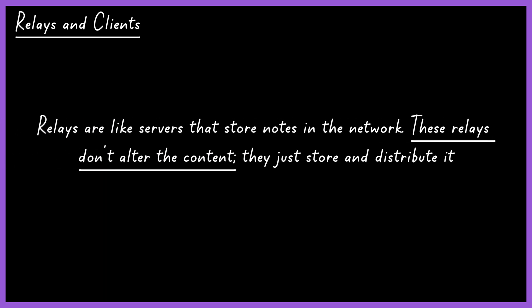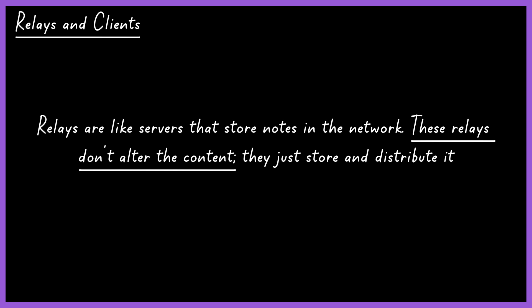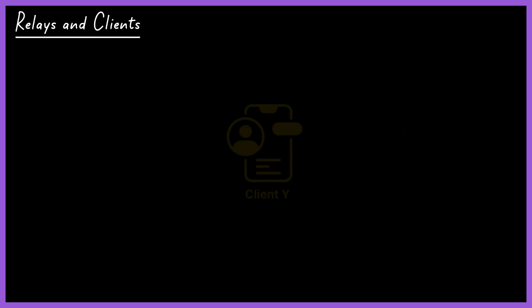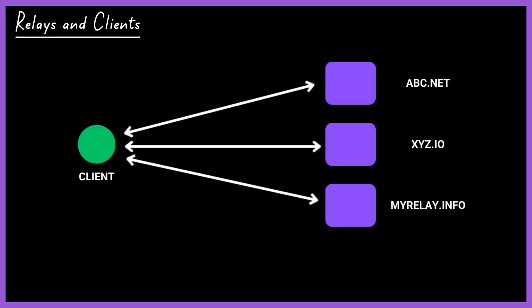To function, Nostr relies on two essential elements: relays and clients. Relays, broadly speaking, are like servers that store notes in the network. These relays don't alter the content — they just store and distribute it. Clients, on the other hand, are applications developed by the community and act as the interface that allows users to post content. This makes the system interesting because if you no longer want to use one client, you can simply switch to another — it's like moving from Instagram to X, but you can still see the posts made on Instagram. The Nostr client connects to a series of relays, and all these relays speak the same language as the client, so the client publishes your notes to all connected relays and can also download notes from other users.